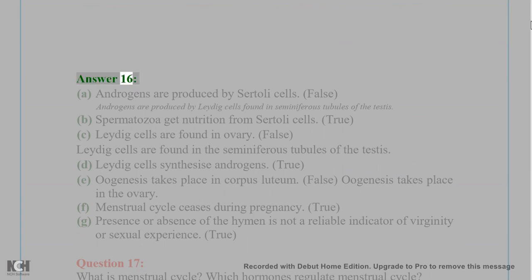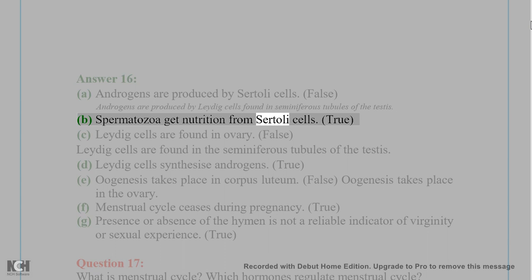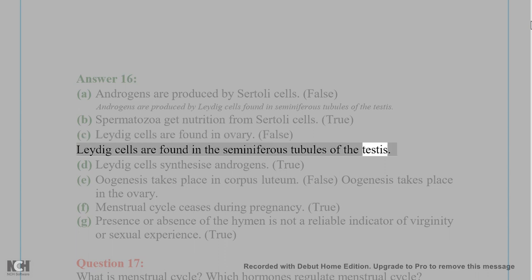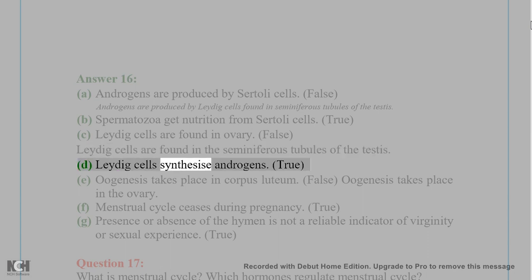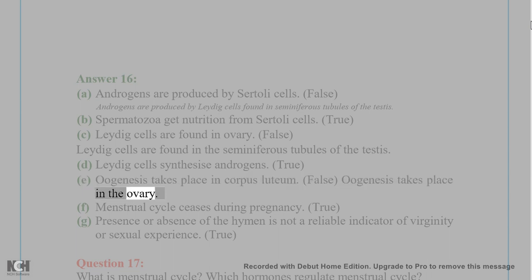Answer 16: A. Androgens are produced by Sertoli cells — False. Androgens are produced by Leydig cells found in the seminiferous tubules of the testis. B. Spermatozoa get nutrition from Sertoli cells — True. C. Leydig cells are found in ovary — False. Leydig cells are found in the seminiferous tubules of the testis. D. Leydig cells synthesize androgens — True.